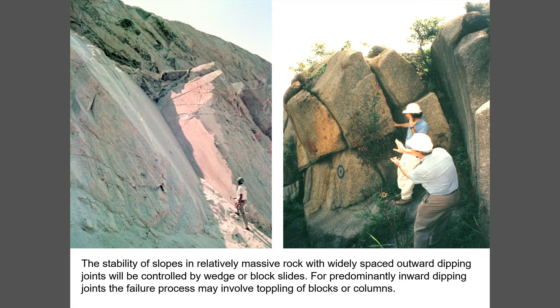At one end of the scale, if we have massive rock with very widely spaced discontinuities, failures are clearly structurally defined. On the left you see a wedge failure in an open pit mine bench, where two intersecting planes created a situation where the wedge simply slides out along the line of intersection. On the right you see a potential toppling failure where the major joints dip into the slope, and a tall column will tend to gradually topple over. Both are controlled by structural features rather than by the properties of the intact material.